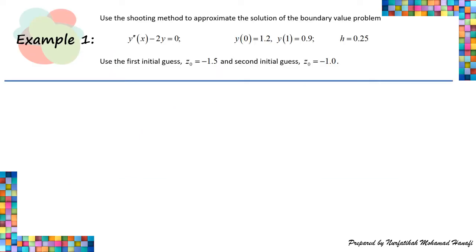For better understanding, let's solve an example. Use the shooting method to approximate the solution of the boundary value problem: Y'' - 2Y = 0, with Y(0) = 1.2 and Y(1) = 0.9. The step size is h = 0.25. We are given the first initial guess Z₀ = -1.5 and the second initial guess Z₀ = -1.